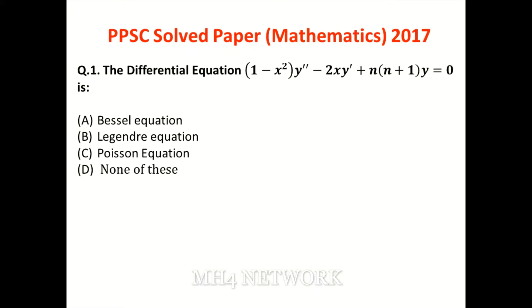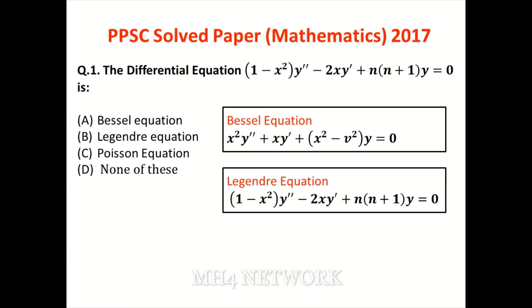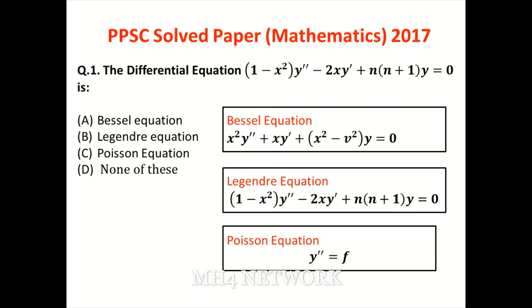Is question mein equation ki shakal ka pata hona chahiye. Vessel equation ki form second degree first order hoti hai. Jo question mein given hai woh Vessel equation nahi hai. Legendre equation ki form alag hoti hai — woh yaad rakhni padegi. Poisson equation mein agar f zero ho toh yeh Laplace equation ban jaati hai. Is liye humare paas option B sahi answer hai.